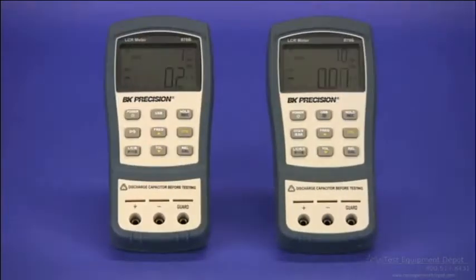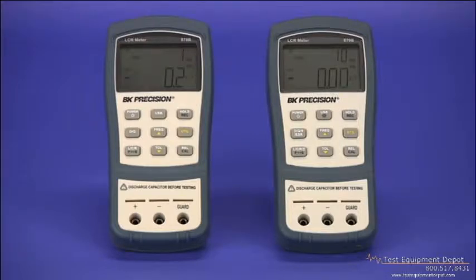Here are the models 878B and 879B. Both are dual display handheld LCR meters, capable of measuring multiple parameters of capacitors, inductors, and resistors.